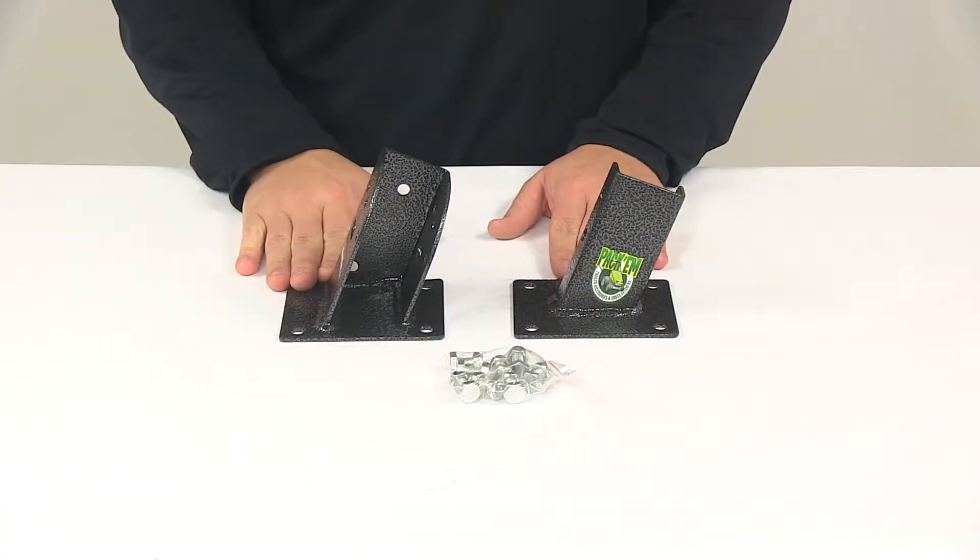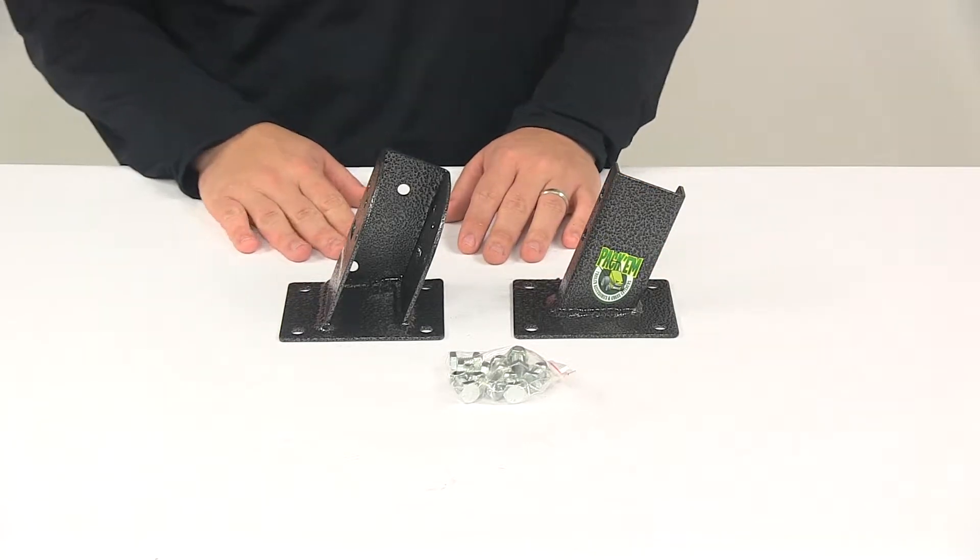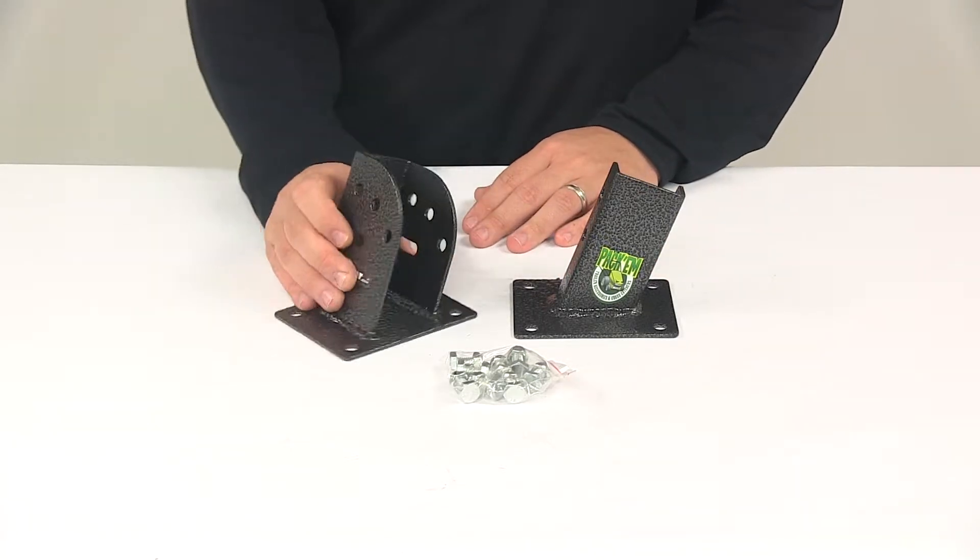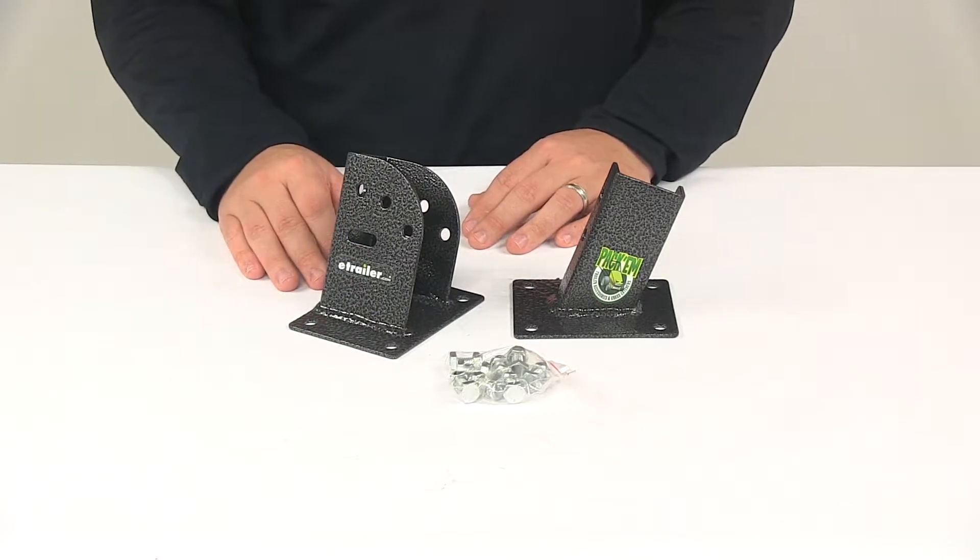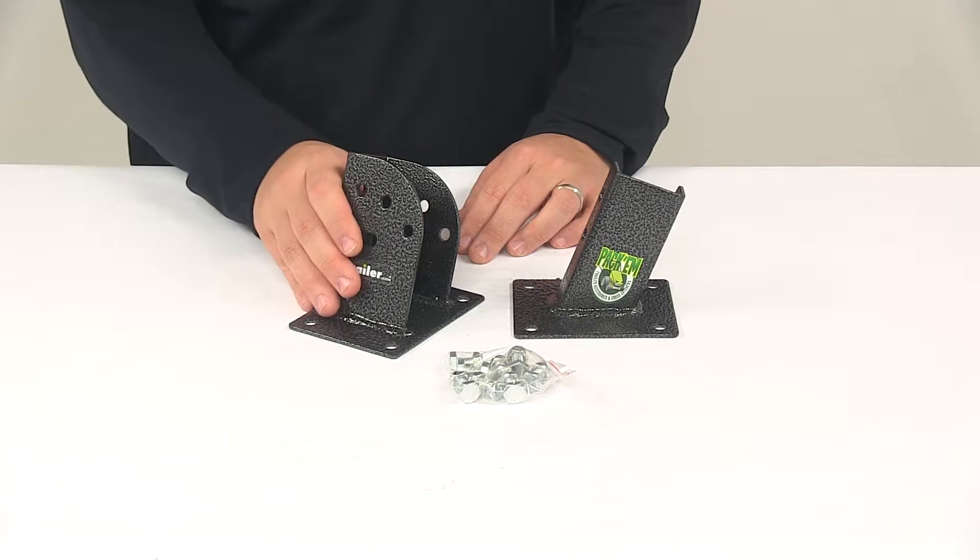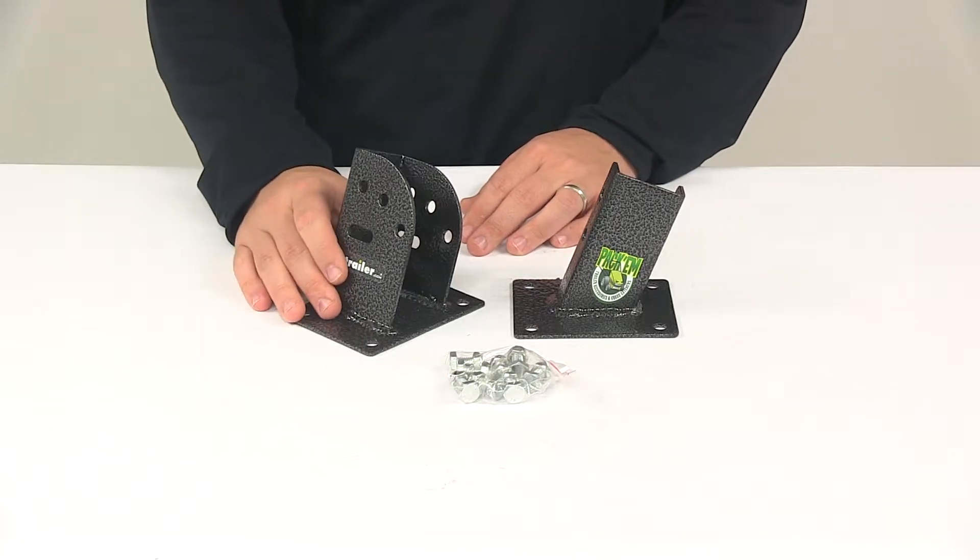The brackets are a universal mount so you can install these in ways that work best for your mower. They're going to be pre-drilled and they bolt onto your mower. Now most mower applications will require some drilling. You want to be sure to place these in areas that can support the rack and the weight of the trimmer.